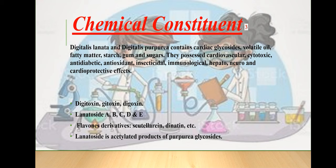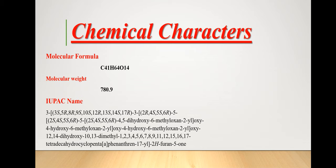Regarding chemical constituents, Digitalis lanata and Digitalis purpurea contain cardiac glycosides, volatile oils, fatty matter, starch, gum, and sugars. The main constituents to be discussed are digitoxin, digoxin, and lanatosides A, B, C, D, and E. Flavone derivatives are also present; lanatosides are the acetylated product of purpurea glycosides.